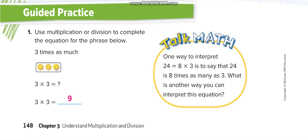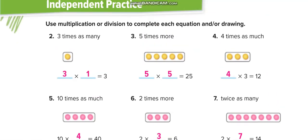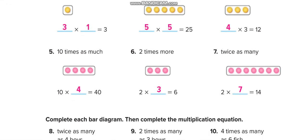Now use multiplication or division to complete the equation. This one is very simple — they give you three counters here, so three times as much: three times three equals nine. On the next page, three times as many: three times one. Then five times more: one, two, three, four, five — five times five.